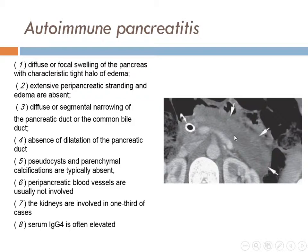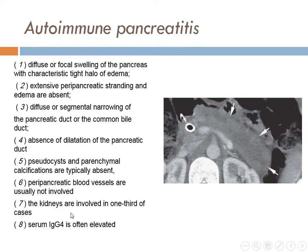Autoimmune pancreatitis should be differentiated from other types. It features either diffuse or focal swelling of the pancreas with a characteristic tight halo of edema, without extensive peripancreatic stranding. There is diffuse or segmental narrowing of the pancreatic duct or CBD, absent dilatation of the pancreatic duct, no pseudocysts or calcification, and it does not involve blood vessels. The kidney is involved in one-third of cases in the shape of a wedge defect enhancement. Serum IgG4 is often elevated.